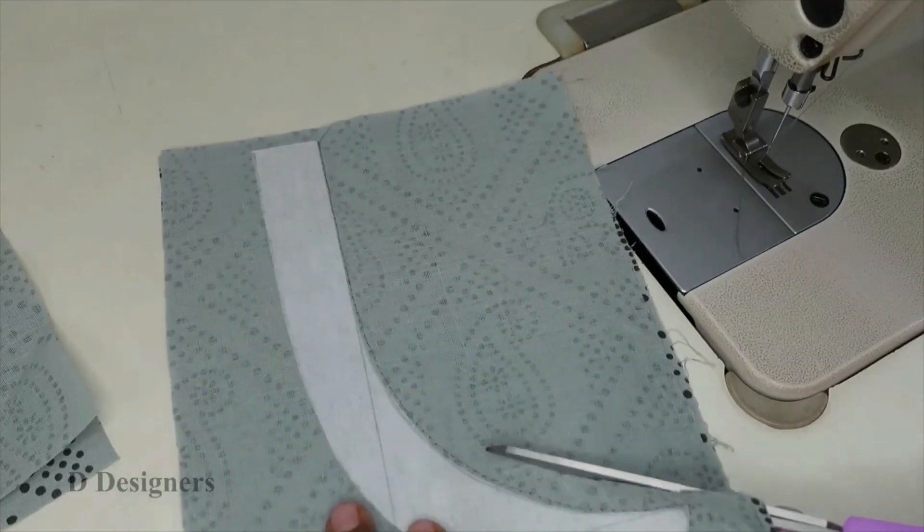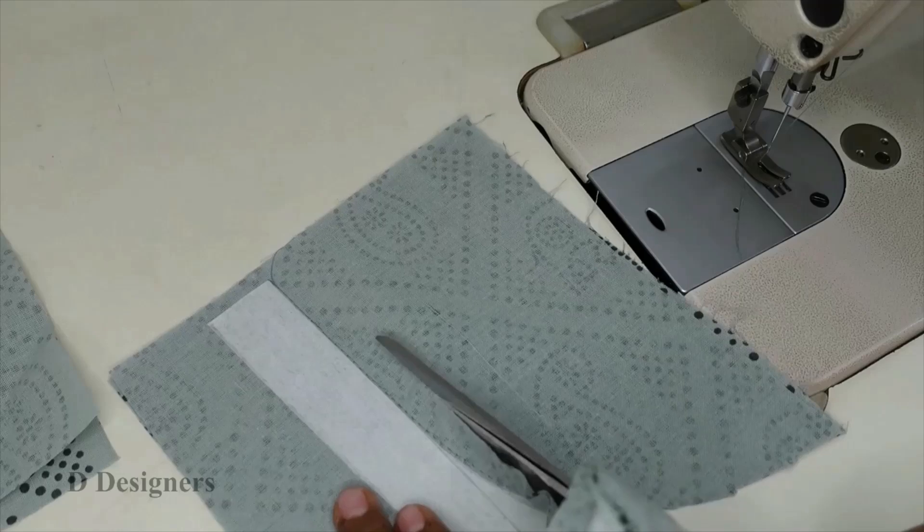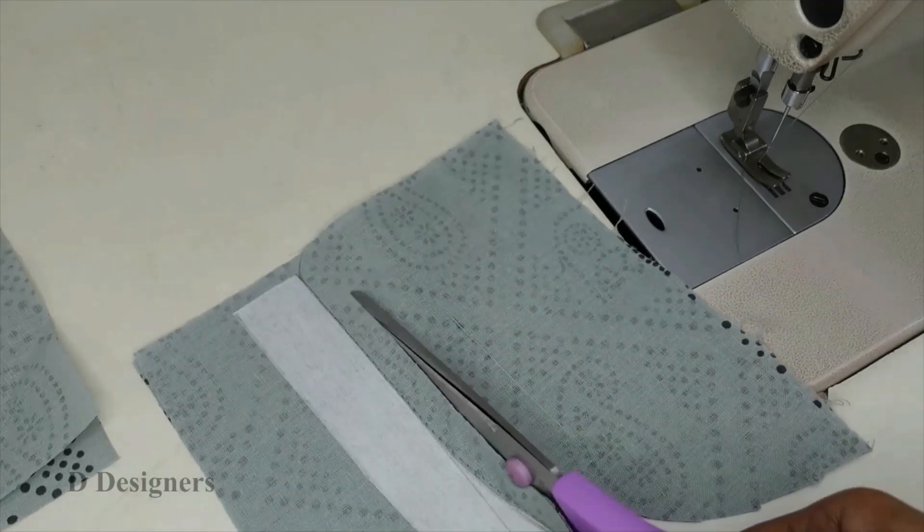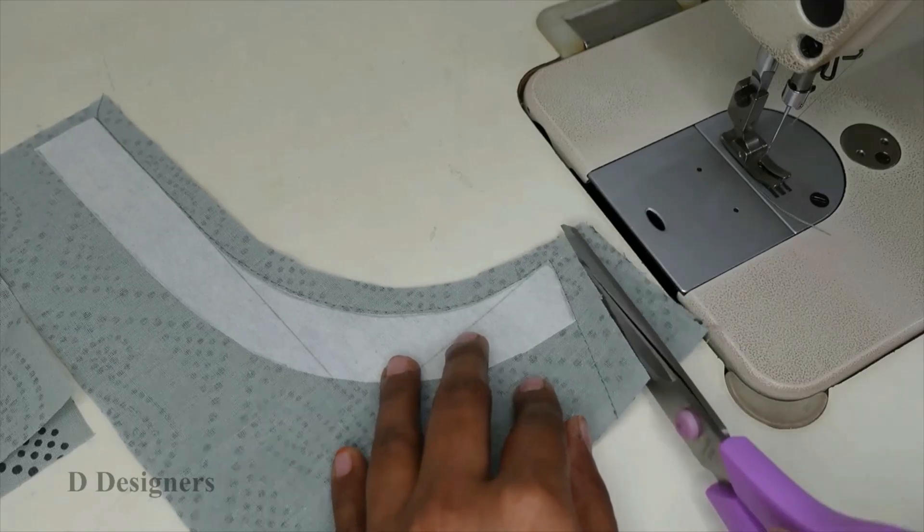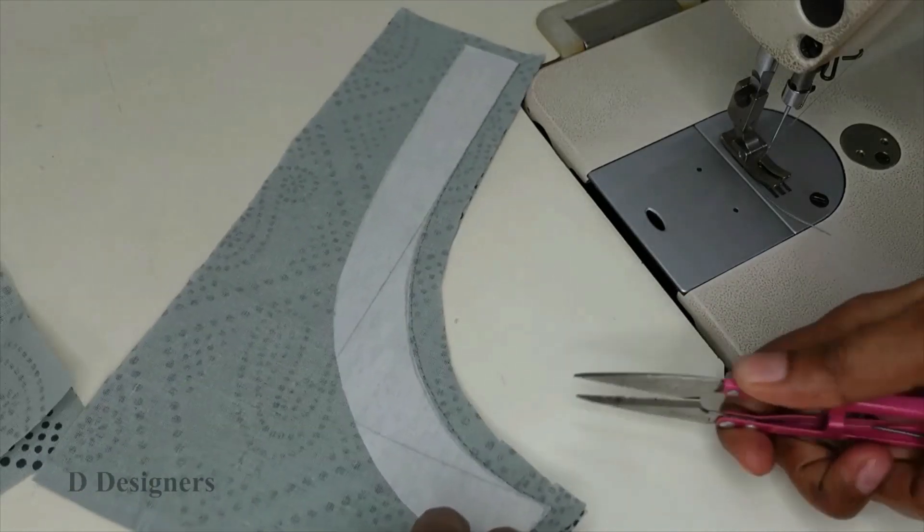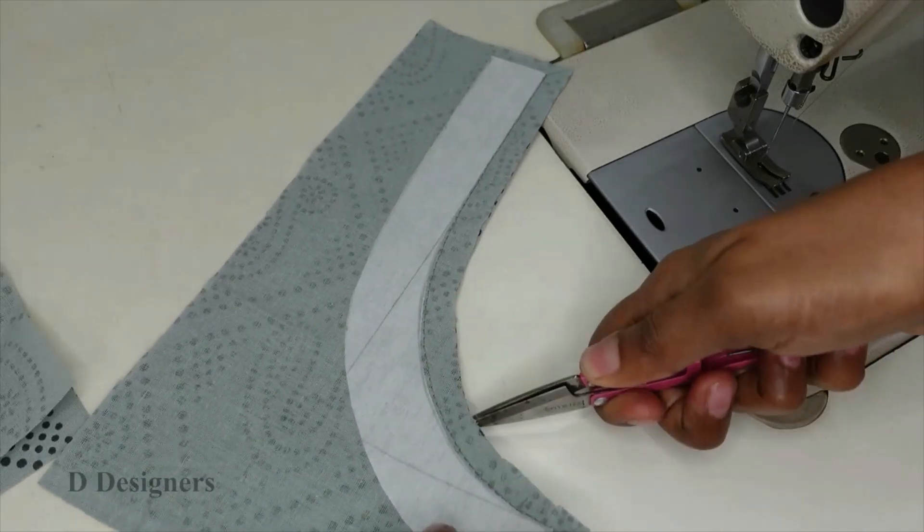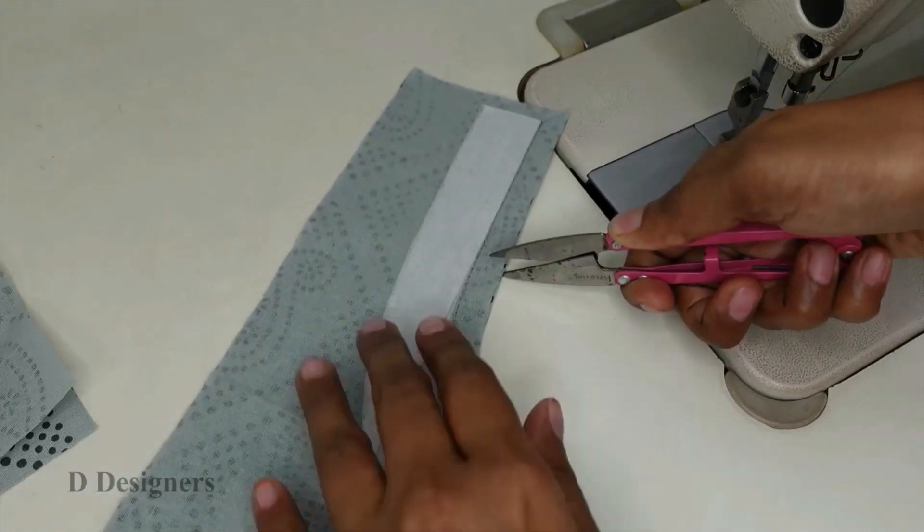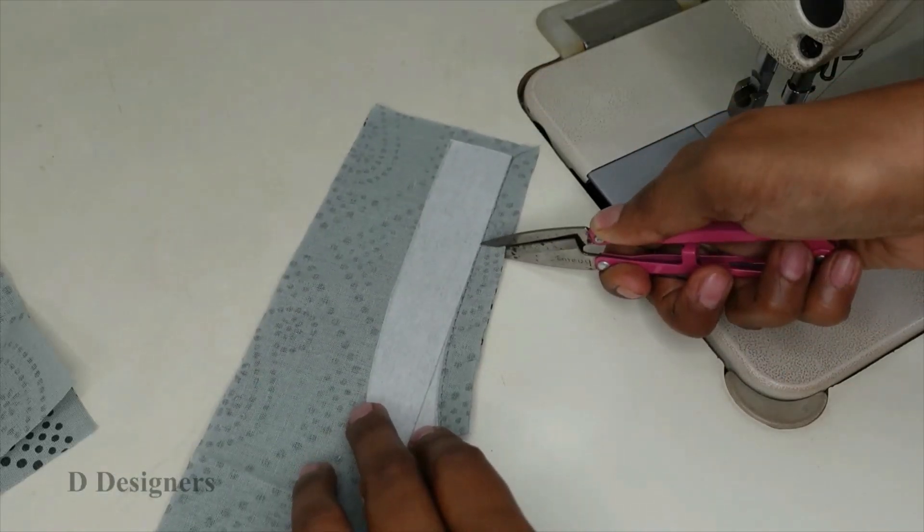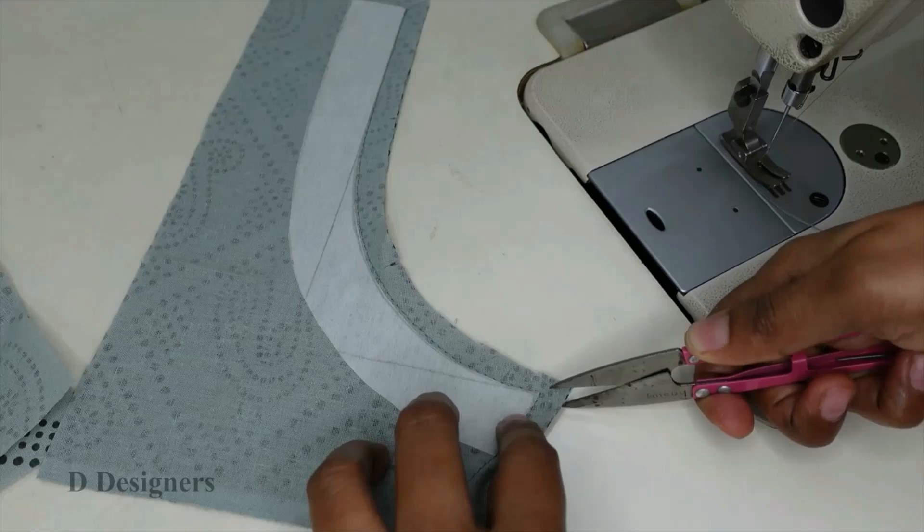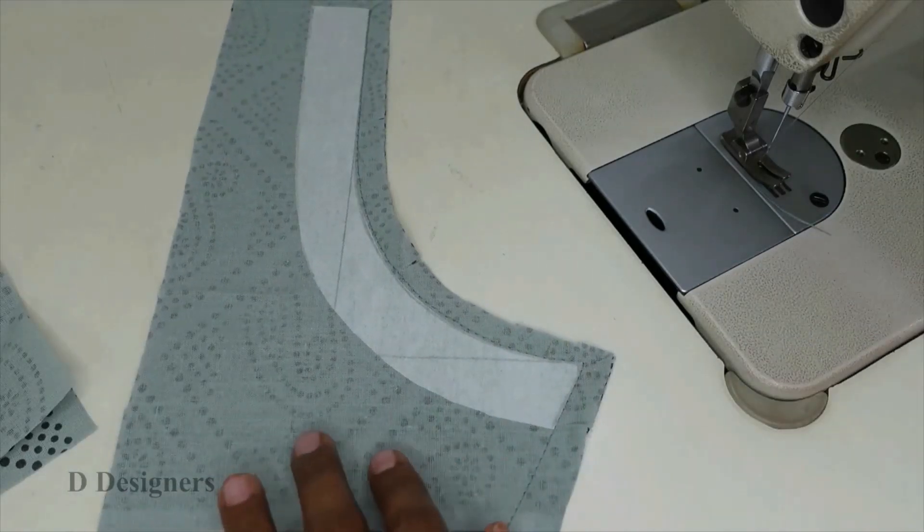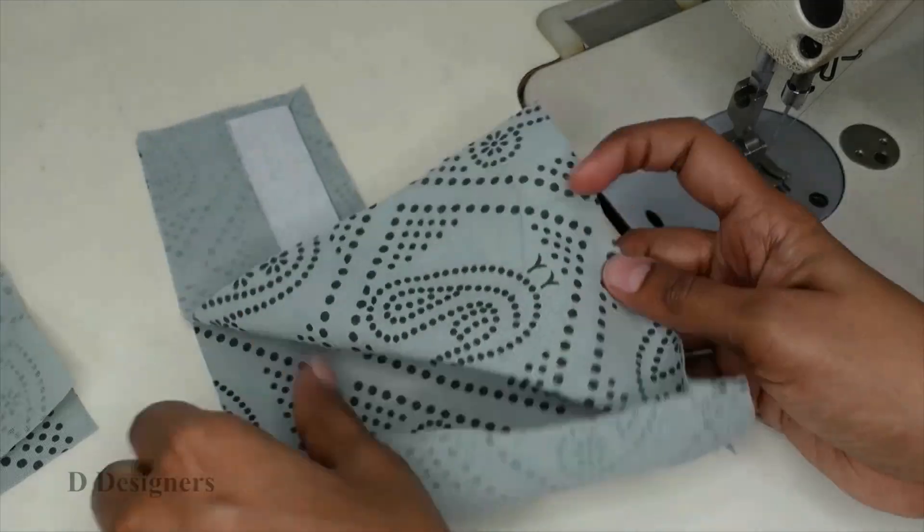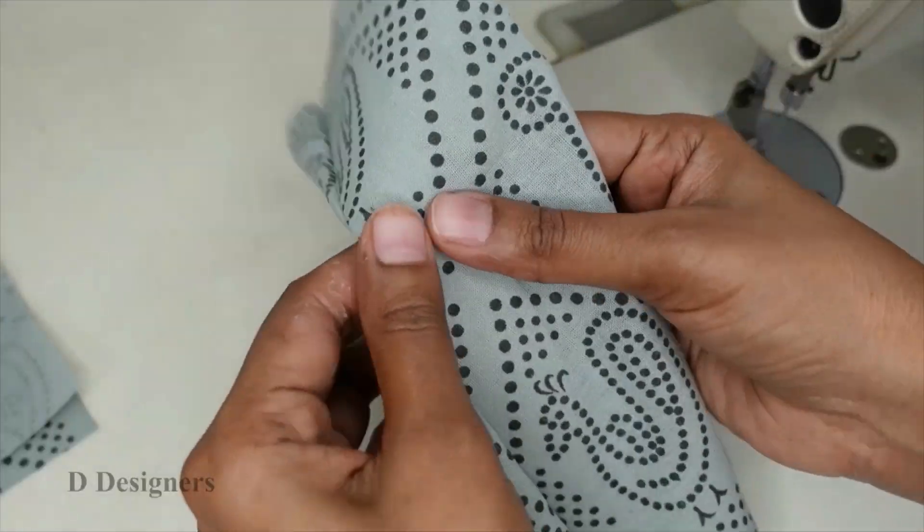Now I am going to cut according to the shape of the neck. Now make slits nice to make it easy to turn. I am turning it to the right side.